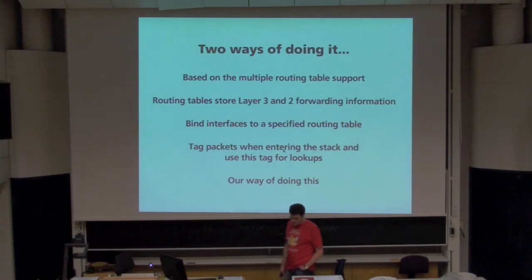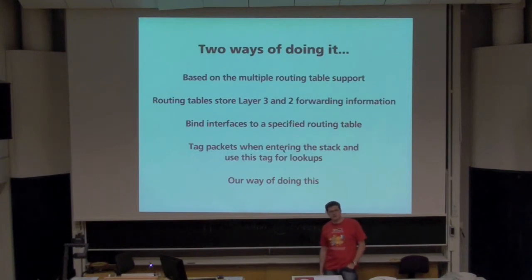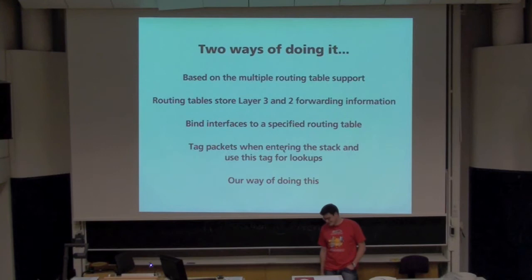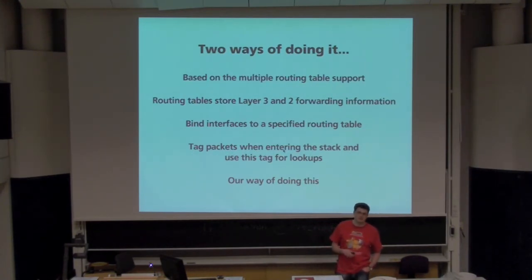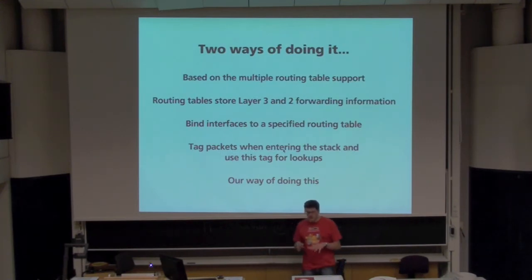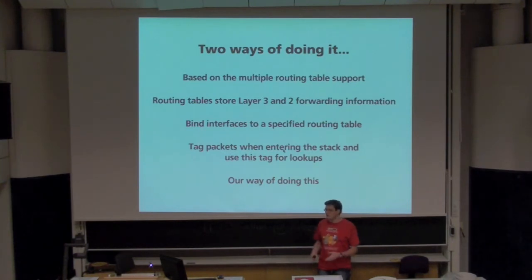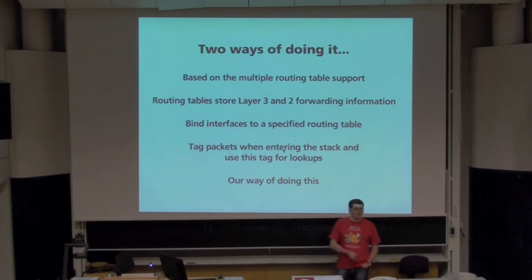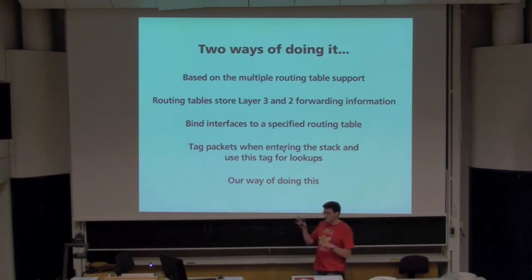The other way is that we already support multiple routing tables in OpenBSD — it's been a couple of years now. Writing that code was hard. Our routing tables for layer three and layer two hold forwarding information. It's quite obvious that when you have multiple routing tables, you could allow packets and all related information to bind into there. You want interfaces to belong to a routing domain, and you need a way to bind interfaces to a routing table. Then you tag packets as they fly through your network stack and ensure that every lookup happens on the right table.